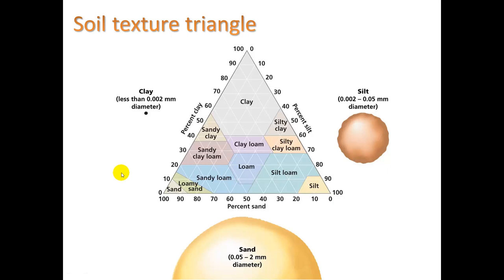There's something called a soil texture triangle that you'll learn how to read. Each side of this triangle represents silt, clay, or sand, and within that you have areas that represent the composition. For example, if our composition was loam, that would mean it is 20% clay, 50% sand, and 30% silt — and these all need to add up to 100%.